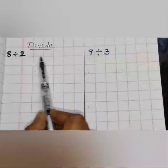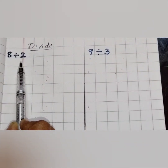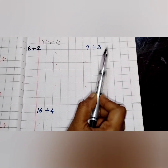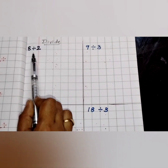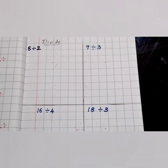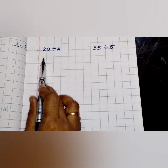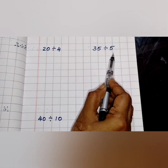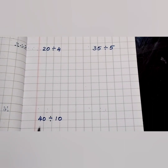Divide. First question: 8 divide by 2, 9 divide by 3, 16 divide by 4, 18 divide by 3, 20 divide by 4, 35 divide by 5, and 40 divide by 10.